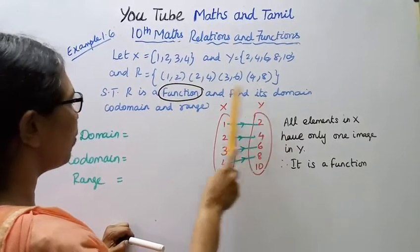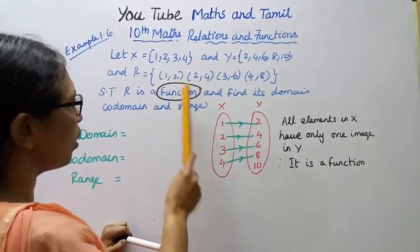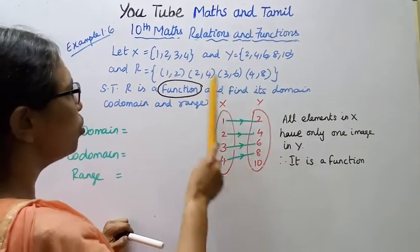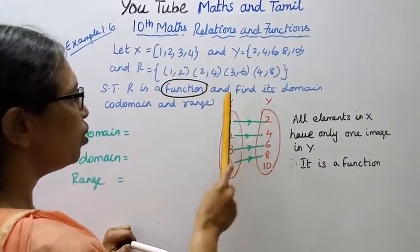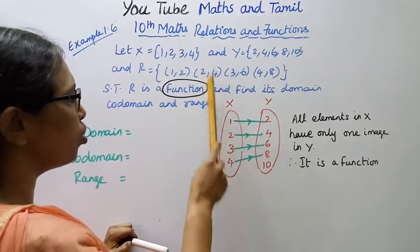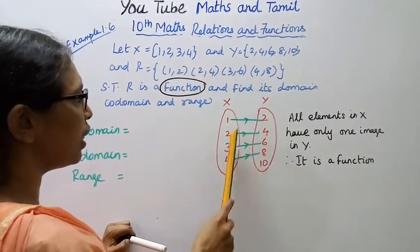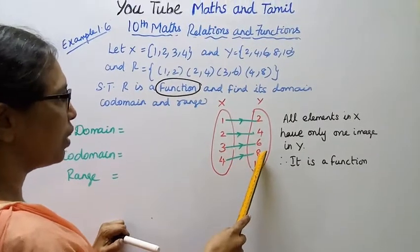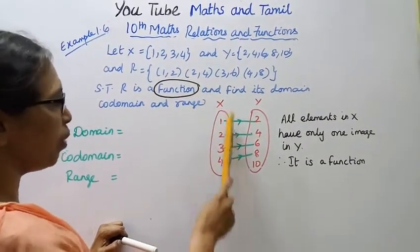Okay, this is capital Y. Now, 1 is related to 2. 2 to 4. 1 is related to 2, 2 is 4, 3 to 6, 4 to 8. Now this is the arrow diagram.